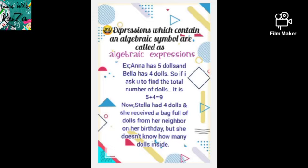Anna has 5 dolls and Bella has 4 dolls. If I ask you to find the total number of dolls, you will surely add them because Anna has 5 and Bella has 4. Total means addition — you have used the algebraic symbol of addition. So 5 plus 4 is 9.